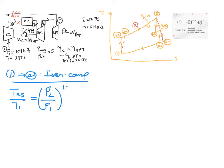to the power of (K minus 1) over K. So when you rearrange, your T2S will become 298 times 5 to the power of 0.4 over 1.4, and finally you will get the answer as 472 Kelvin